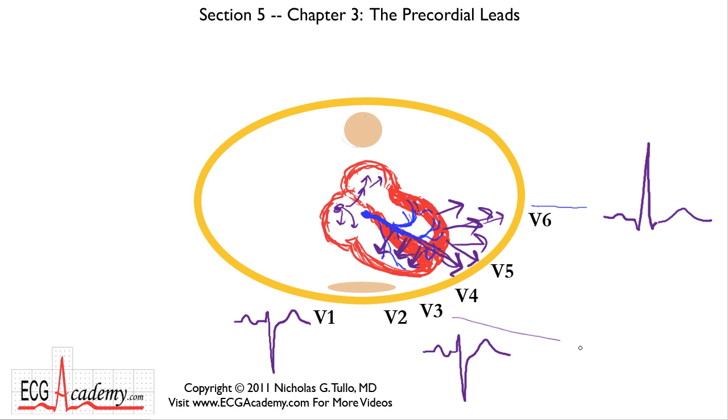So in this case, we'll have a transition point be at V4, which is more common, I think, than V3. You have a P wave, and then you have an R wave that's getting bigger, but the S wave is still there, and it's still a little bit bigger than the R wave. But in V4, now we've reached the transition point on the precordial leads where the R wave is bigger than the S wave.